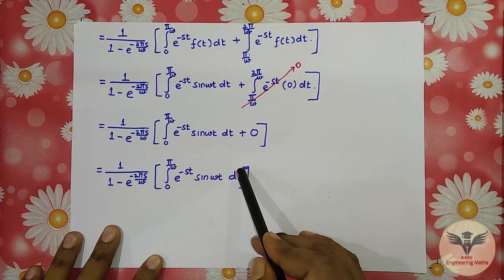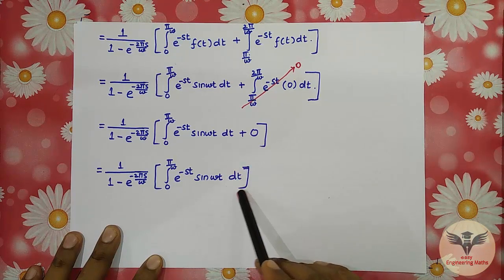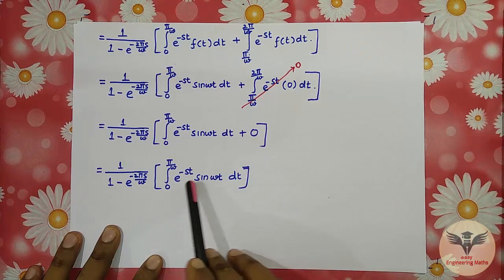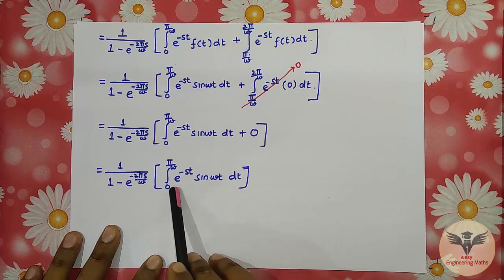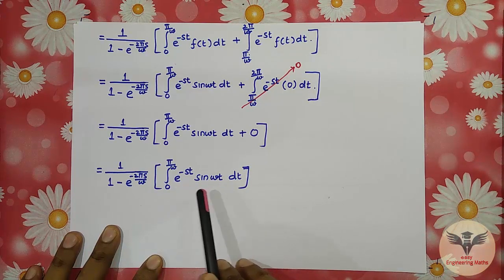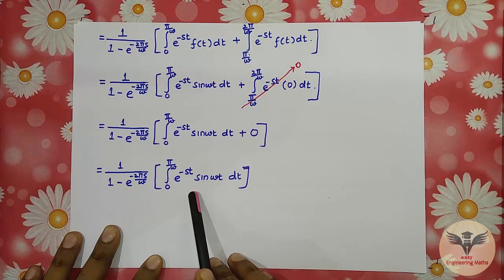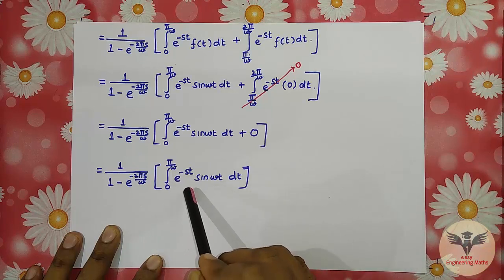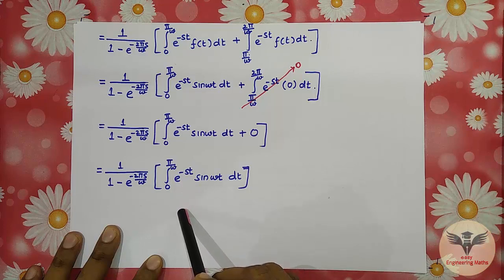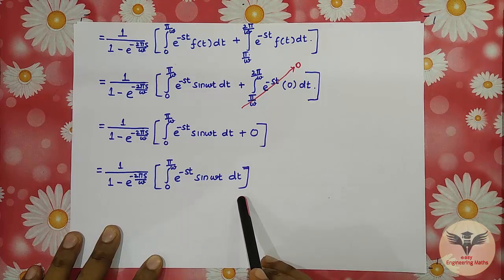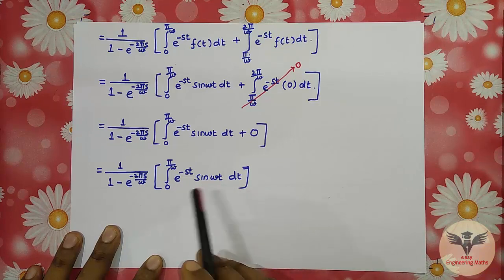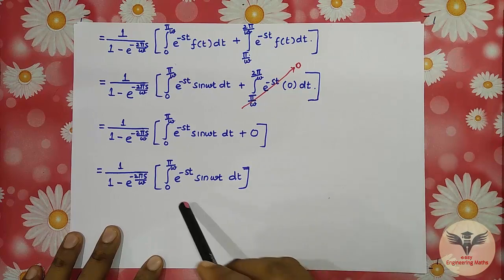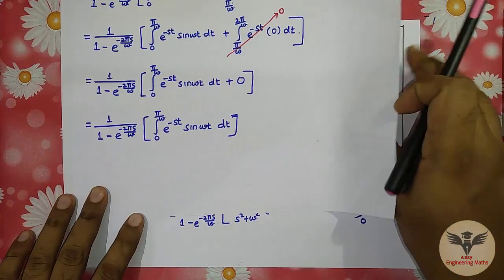We now integrate with respect to t. Since this is a product of two functions, we apply Bernoulli's formula — also known as integration by parts. The front chain condition is satisfied, so we apply the Bernoulli formula using the standard special formula from integration by parts.